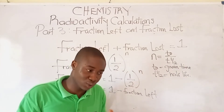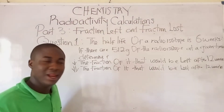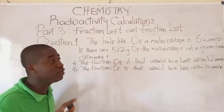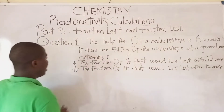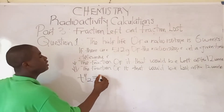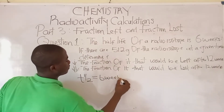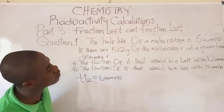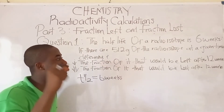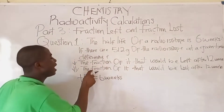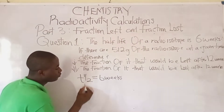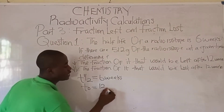Now let's quickly move over to the first question under this aspect. The question says: the half-life of a radio isotope is 6 weeks. The half-life is given as t-half, which is 6 weeks. If there are 512 grams of this radio isotope at a given time, determine the fraction that would be left after 12 weeks and the fraction that would be lost after 12 weeks. The given time in this question is 12 weeks.